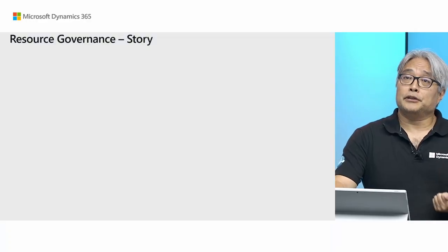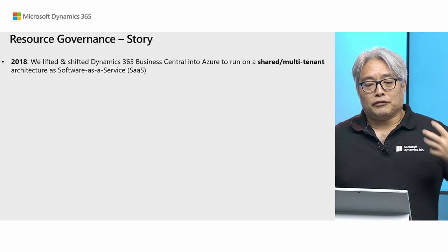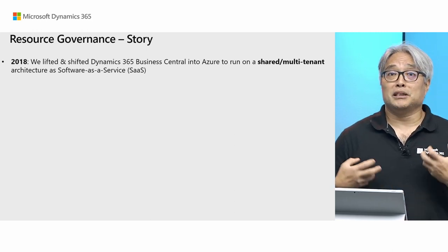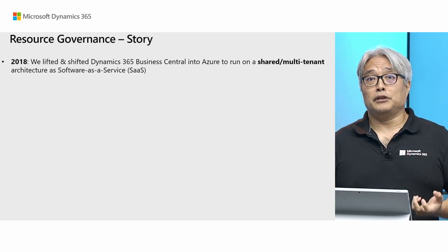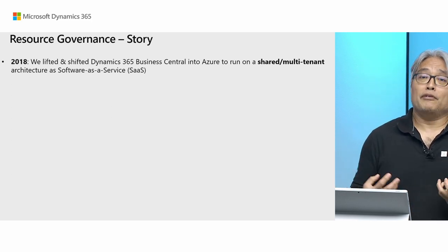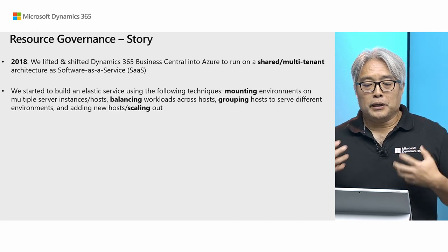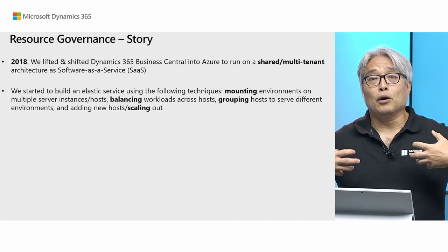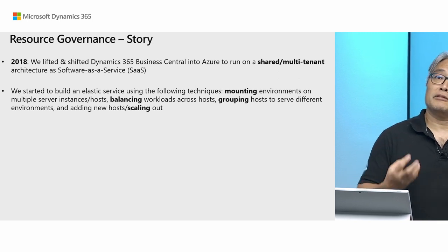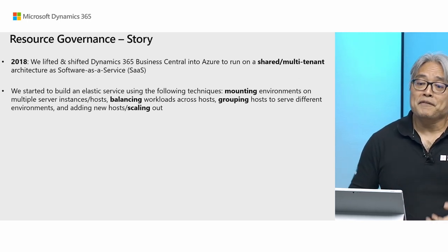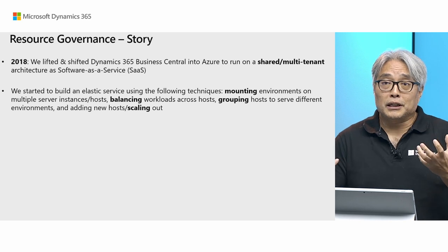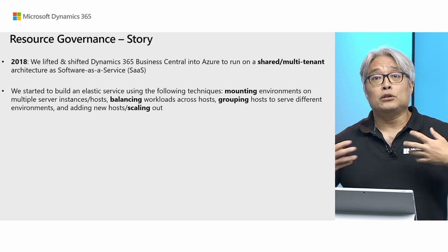Now let me tell you a little of history of where we came from. Our story started in 2018, where there was a general availability of Dynamics 365 Business Central Online. In that year, we lifted and shifted Business Central into Azure to run on a shared multi-tenant architecture — a software-as-a-service or SaaS architecture. When we built this elastic service, we followed the traditional technique for elasticity, which is mounting environments on multiple server instances or VMs, balancing workloads across those hosts, and grouping hosts to serve different environments, and also adding new hosts — scaling out.